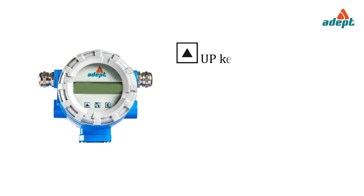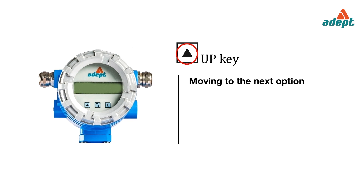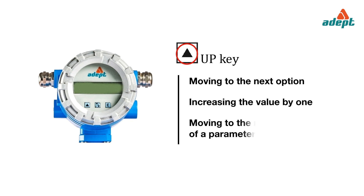Up key functions: moving to the next option within a menu level, increasing the value of a digit by 1, and moving to the next value of a parameter.